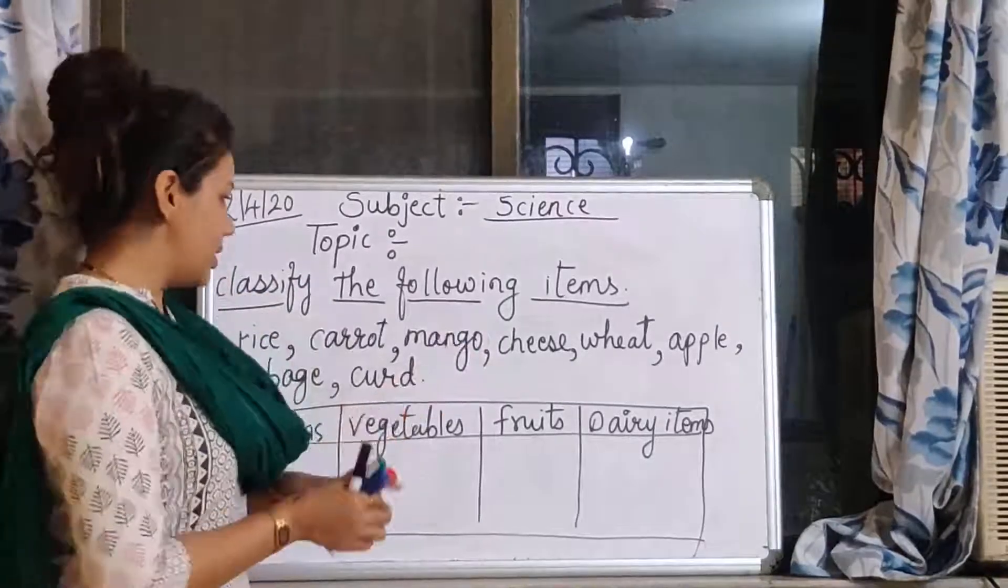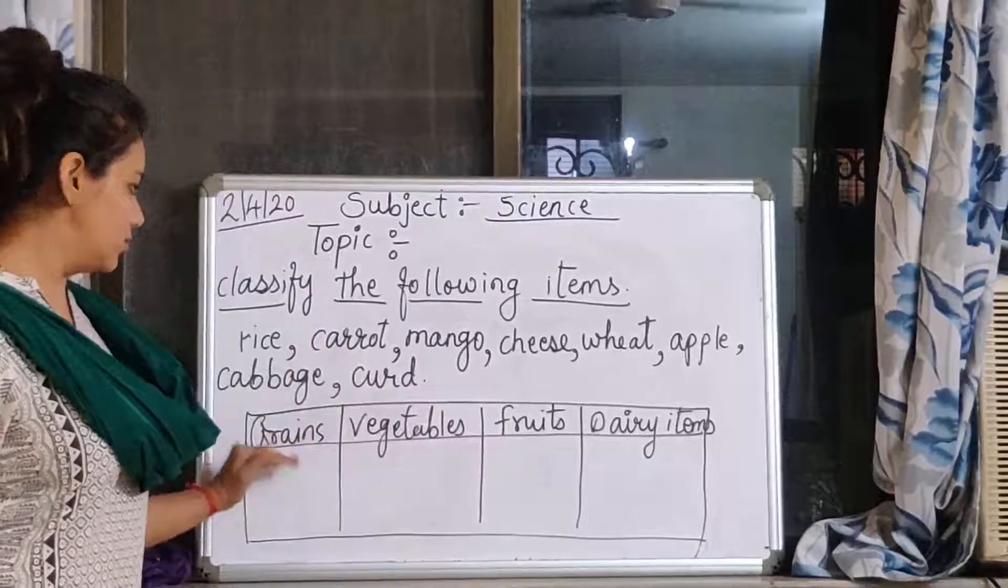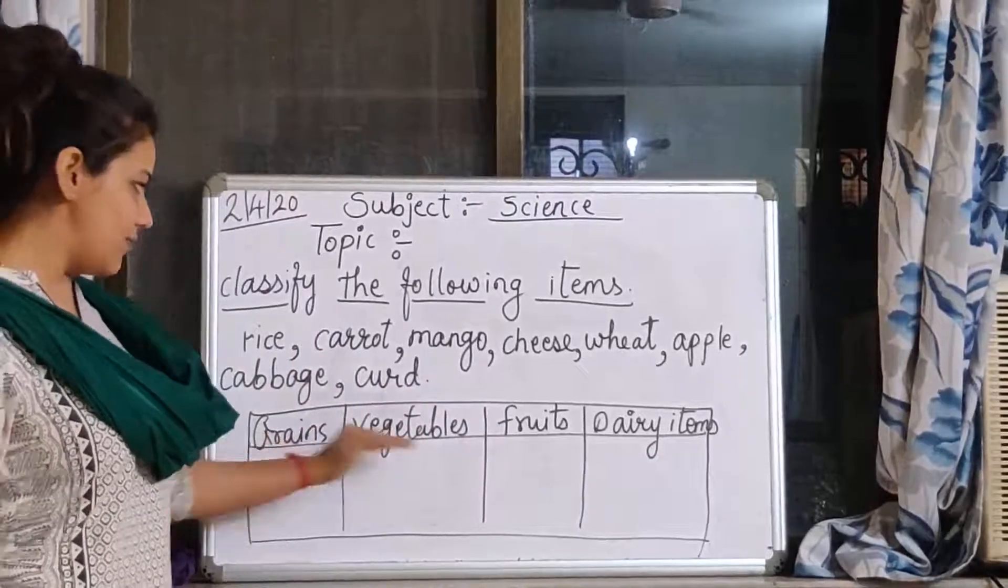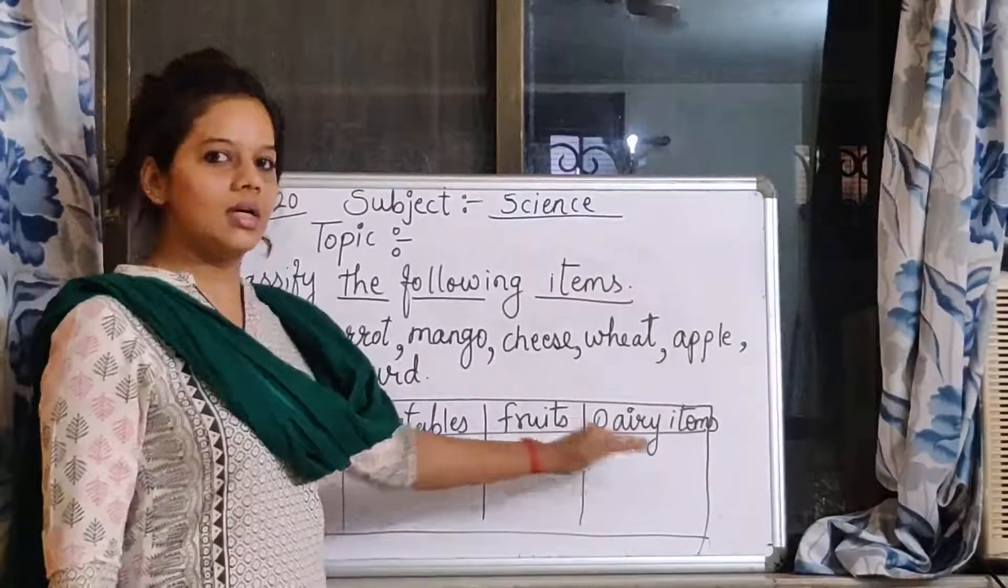Now there are some items given. You have to classify according to the label like grains, vegetables, fruits, dairy items.